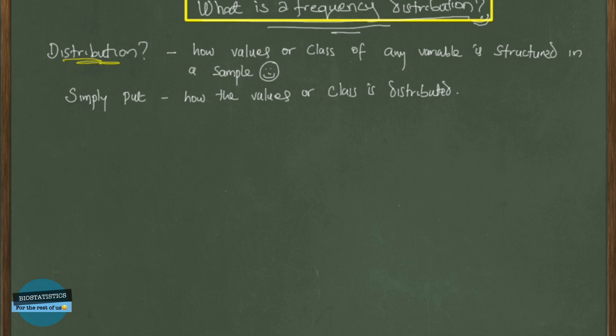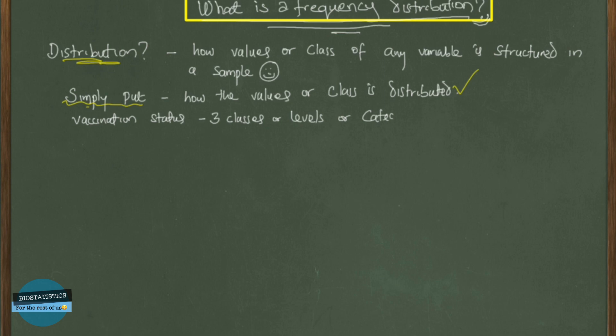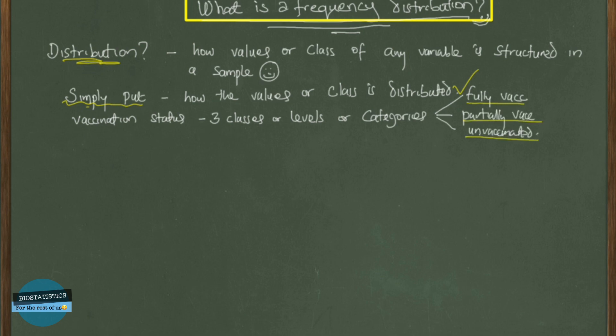So if we have a categorical variable, the variable has classes, and how those classes are distributed in a sample is simply put the distribution. We give an example using a variable called vaccination status. It has three classes or categories because it's a categorical variable: fully vaccinated, partially vaccinated, and unvaccinated. How these classes are distributed in a particular sample explains the distribution in that sample.